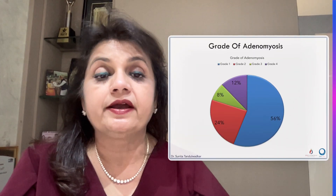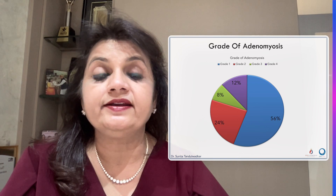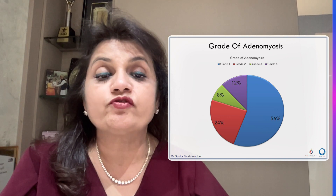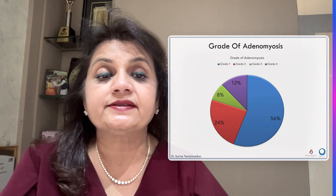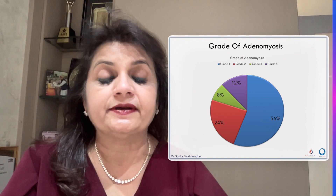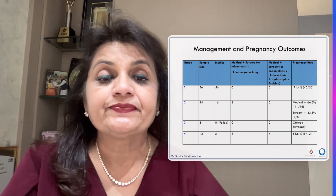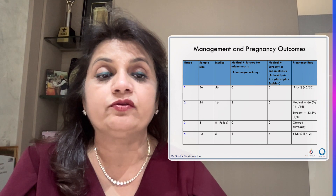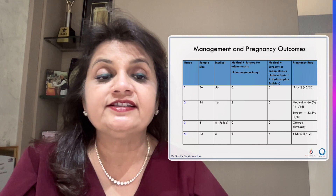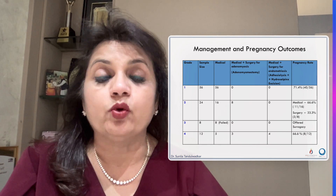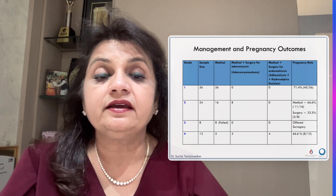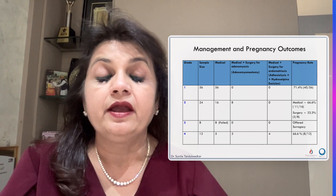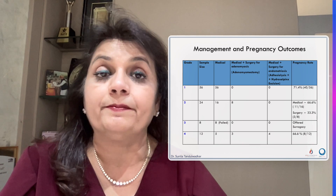Frozen embryo transfers were done in all patients with HRT cycle and beta-hCG was done on day 14. In Grade 1 — that is, less than 4 cm — there were 56% of patients, all treated with medical treatment. The pregnancy rate was 71%; out of 56 patients, 40 conceived. In Grade 2, the sample size was 24: 16 got treated with medical treatment and 8 needed surgical treatment because they were resistant to medical treatment and had compressing adenomyoma.